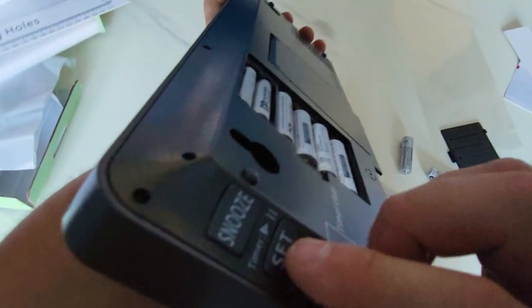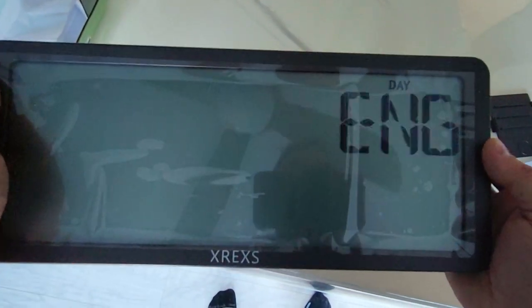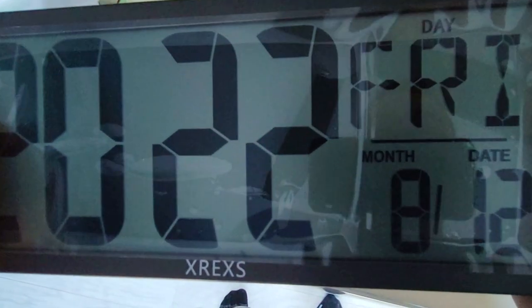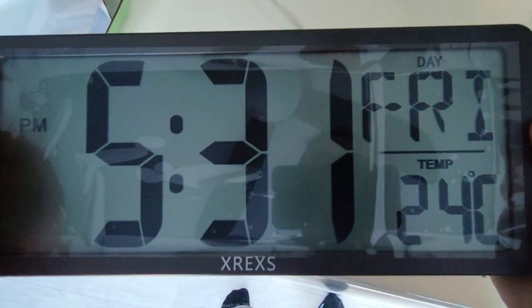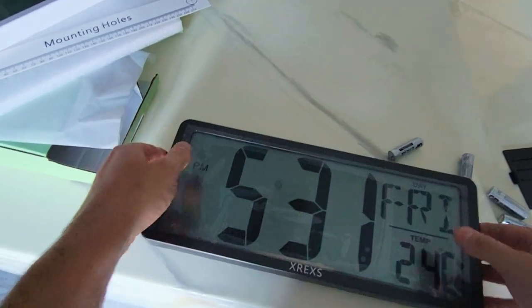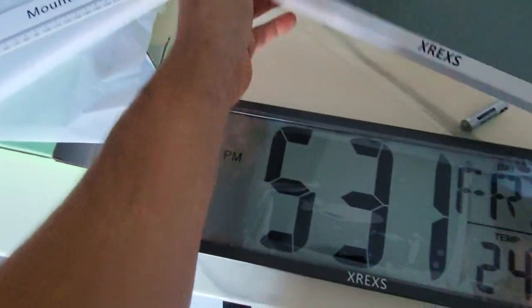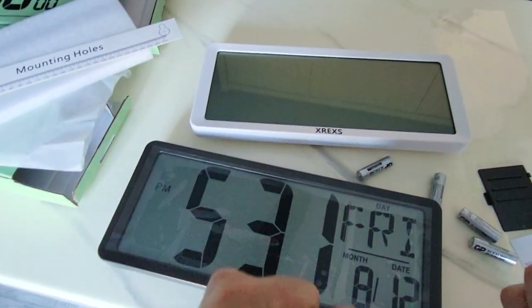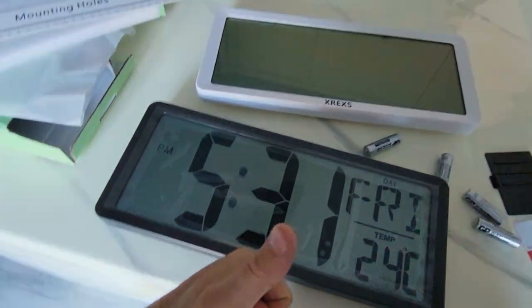Again, to change this, you click set. And then you can just circle through the English language. This is your year, your month, your date, and then the time. And that's it. Let's do it. So again, thanks for watching. This is the X-Rexus LED clock for the modern man. Thanks for watching.